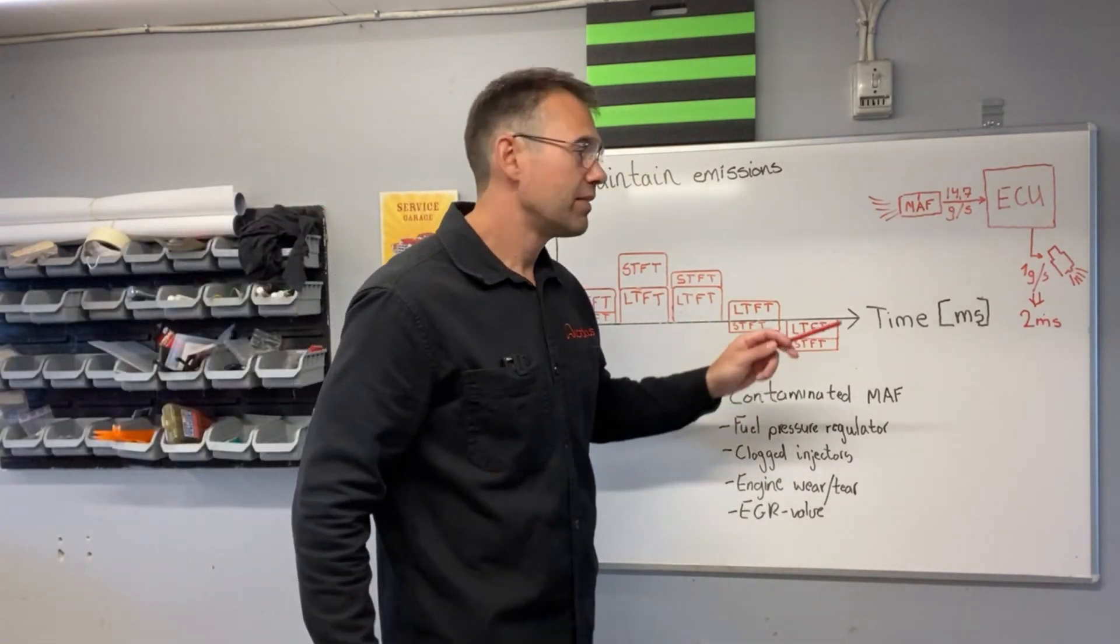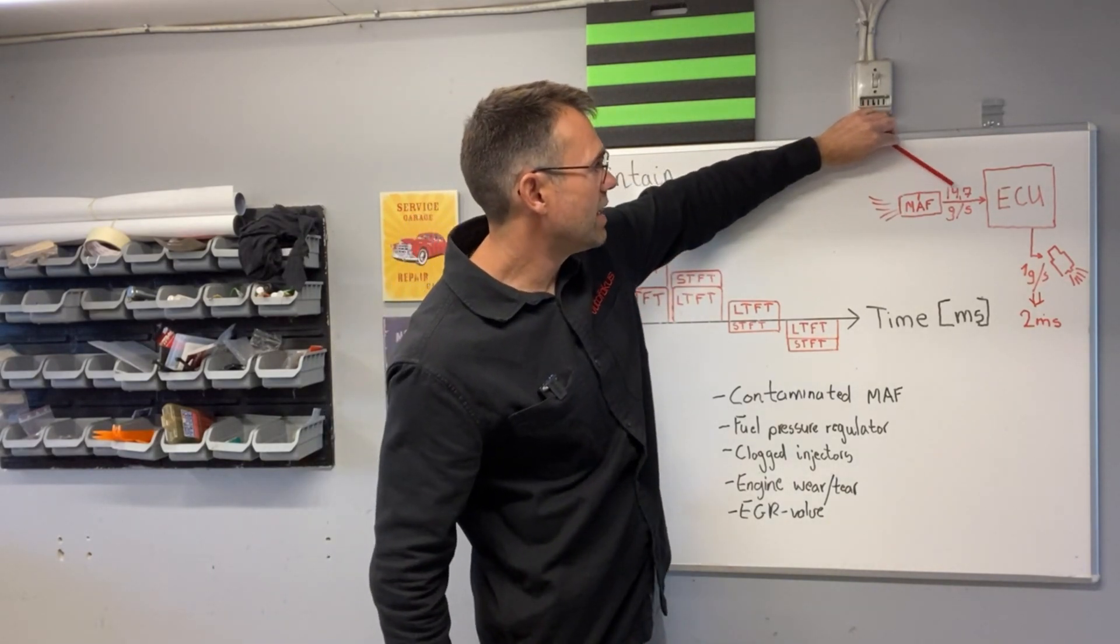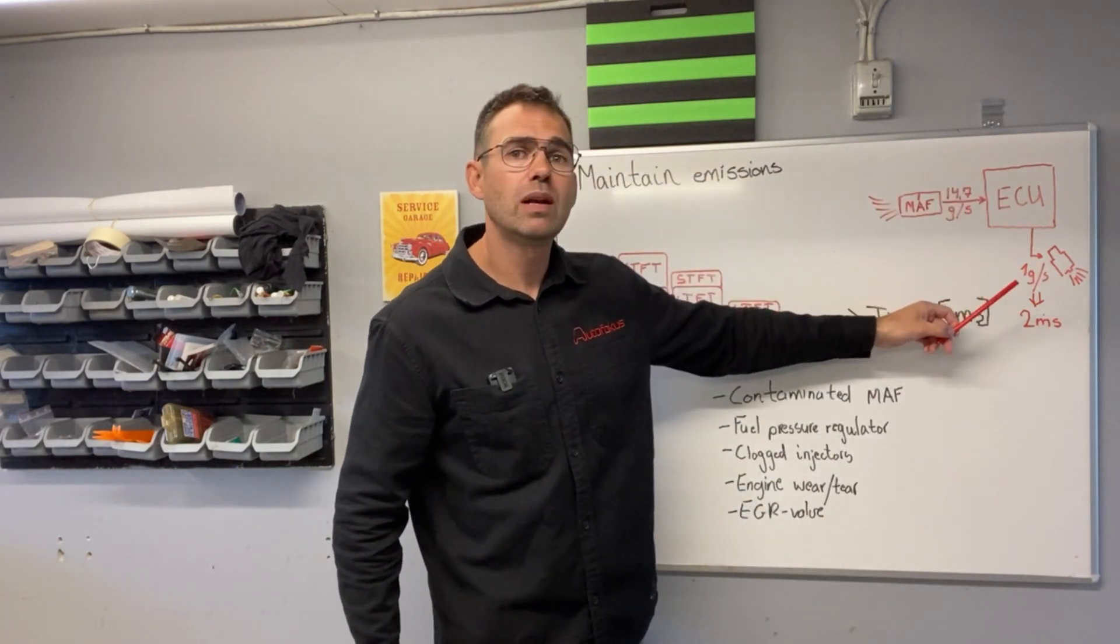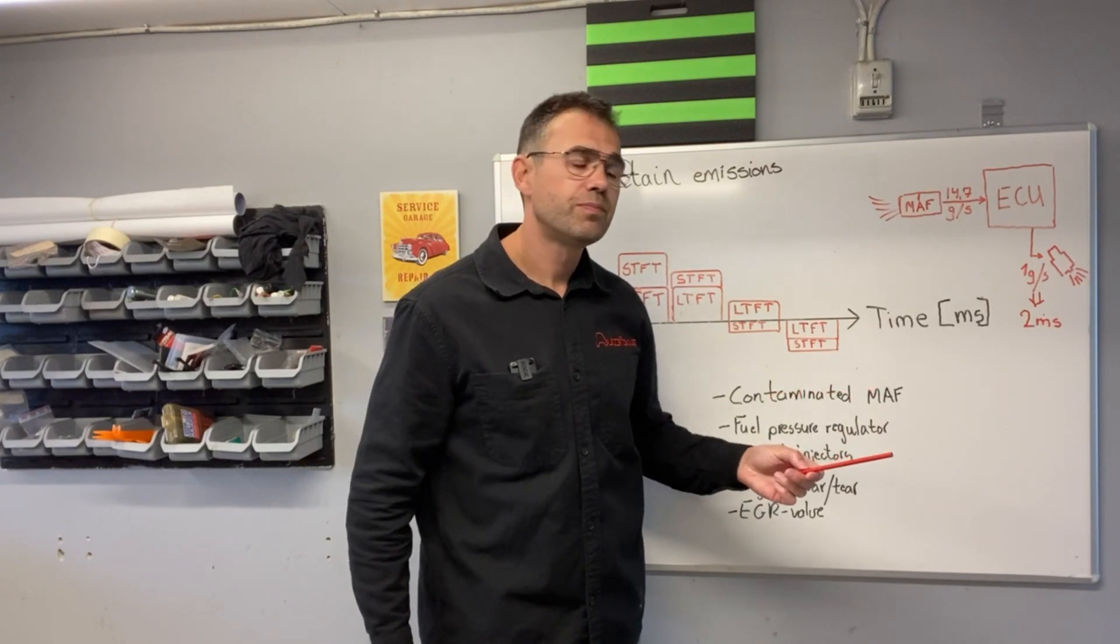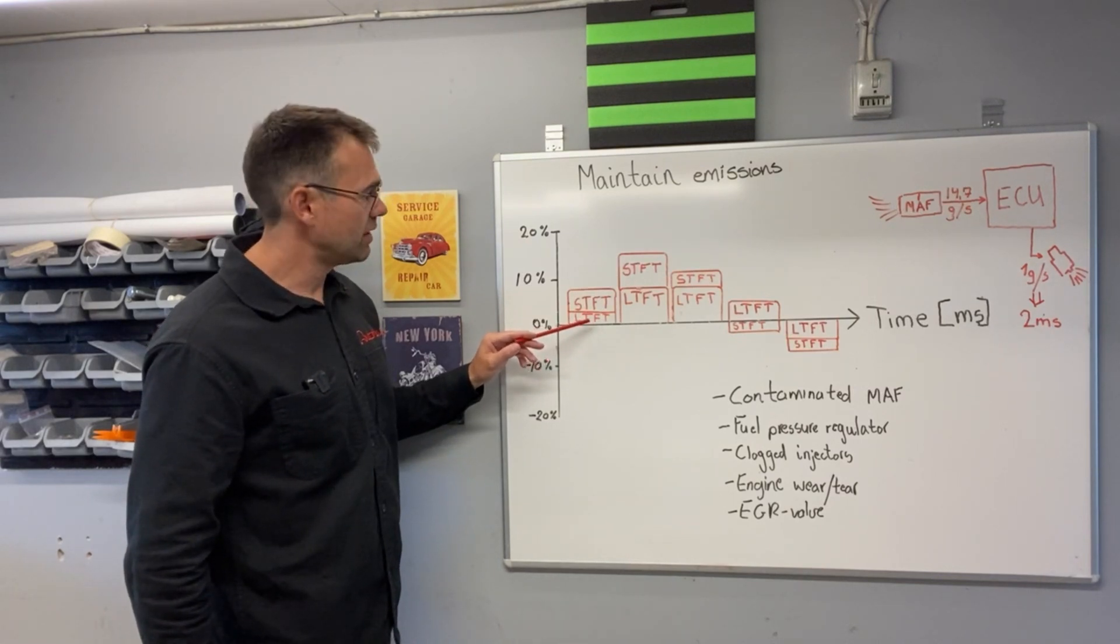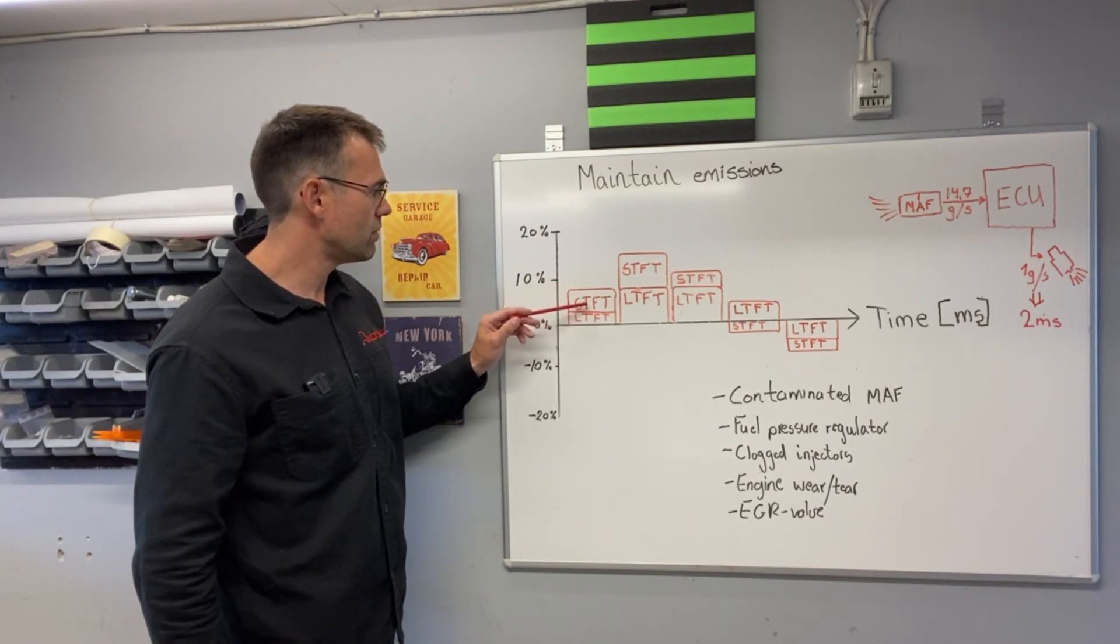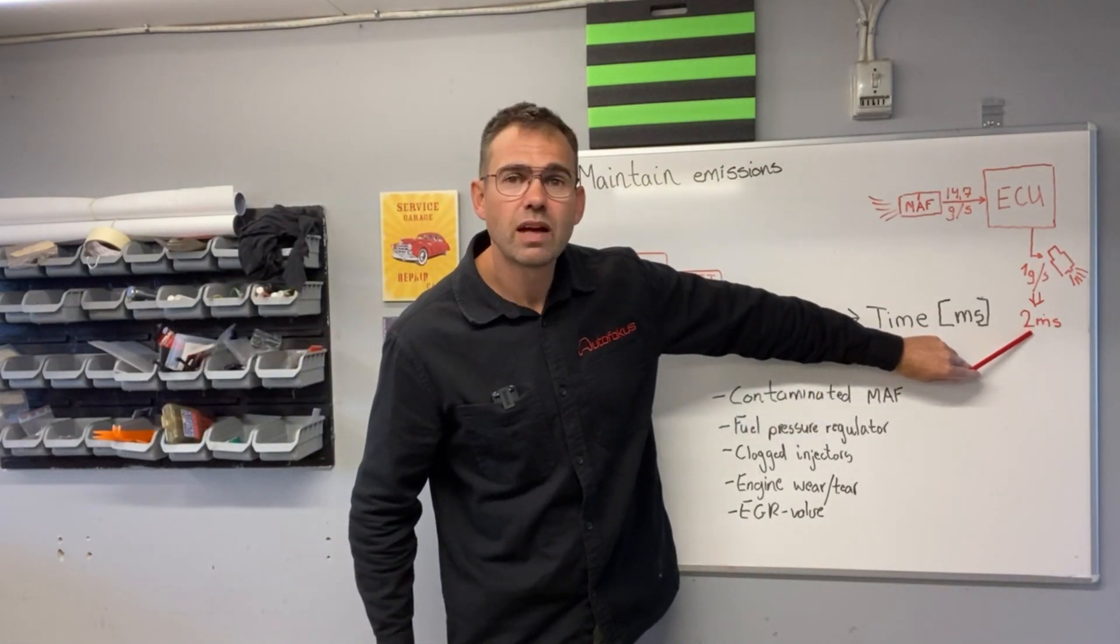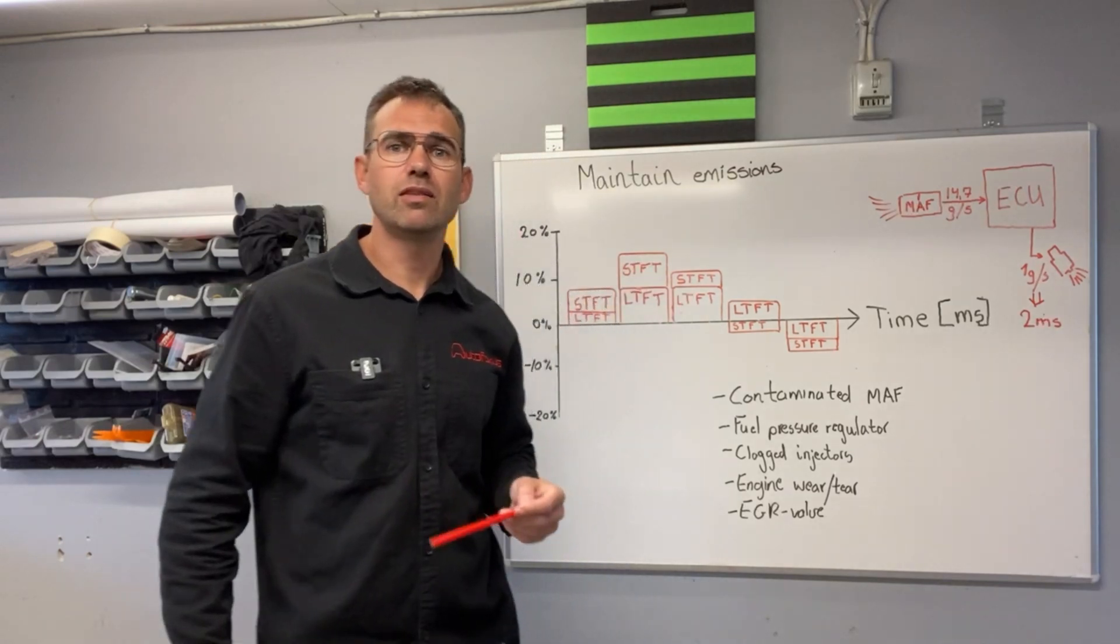I have a small example here to make it more understandable. Let's say we have a MAF sensor here measuring 14.7 grams per second, telling the ECU that if we want to do lambda 1, it will be equal to 1 gram of fuel per second. But let's say we have this MAF sensor here. Then we will actually have, let's say we add 10% more, if we make a total trim, long term and short term, we add them together, it's a total of 10%. Instead of injecting fuel, having the injector open for 2 milliseconds, then we will have it for 2.2 milliseconds, that's basically what it does.